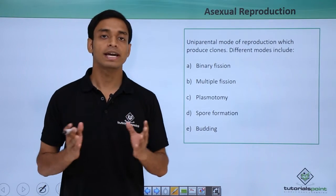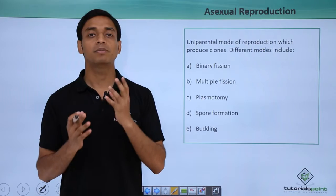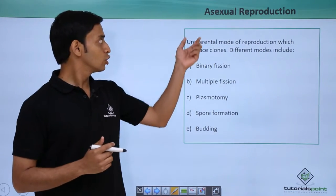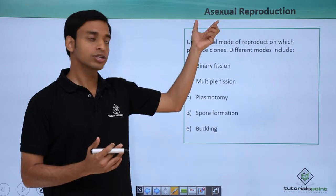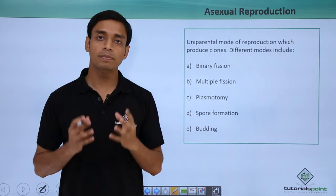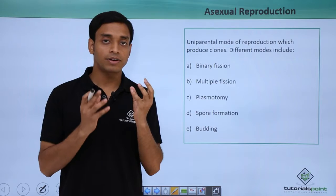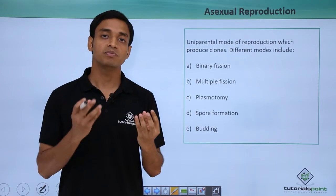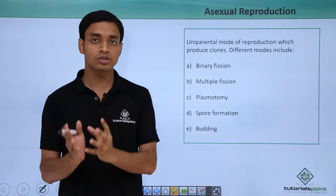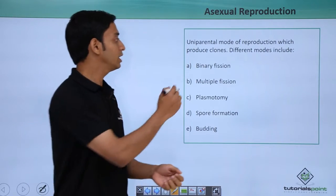The first type is that protists can reproduce asexually. Asexual reproduction is a uniparental mode of reproduction because only a single parent is required. The fusion of two gametes, that is the fusion of male and female gametes, is not required. This is an asexual type of reproduction.